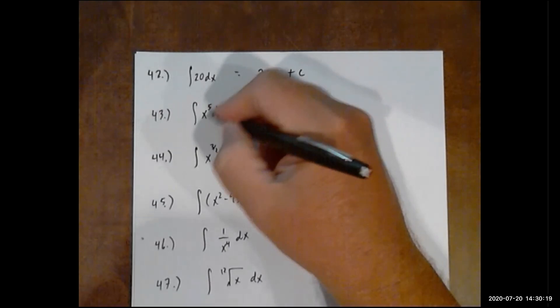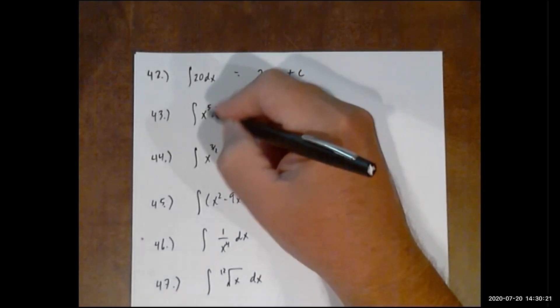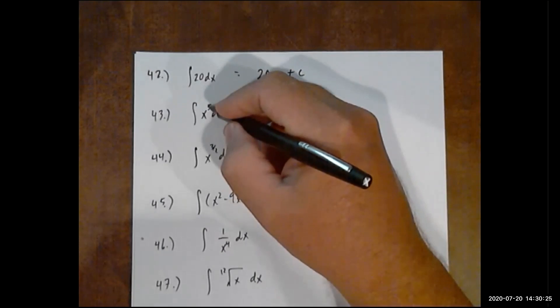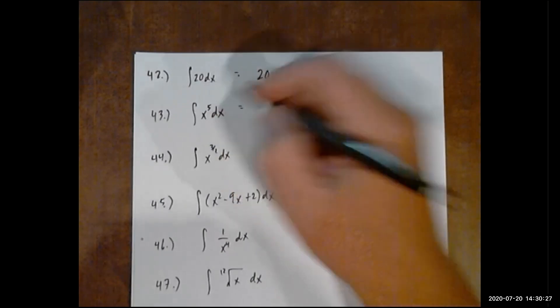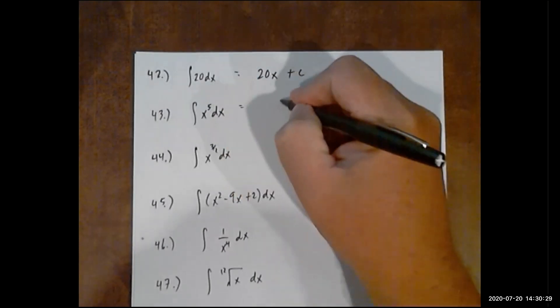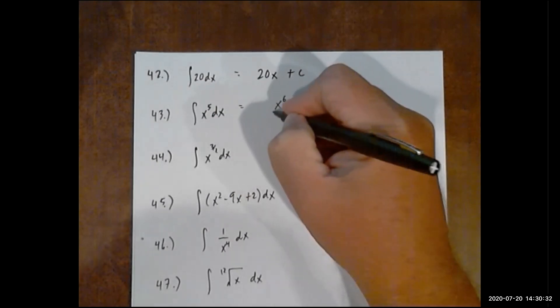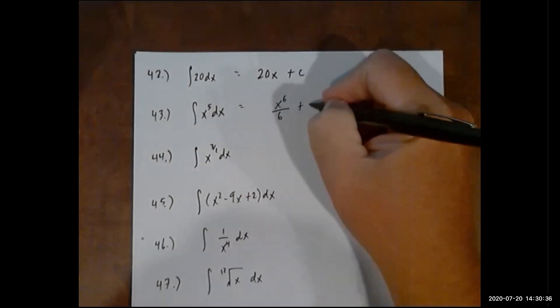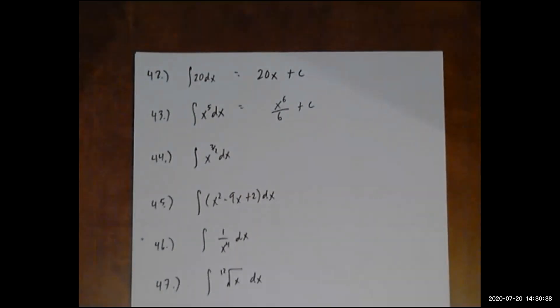Now here, the power rule for integration is you take the integral or the exponent and you add 1, and then you divide by the new exponent.